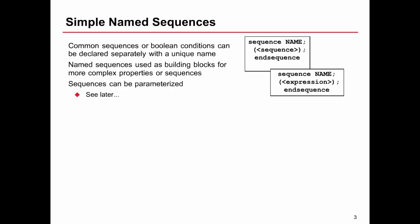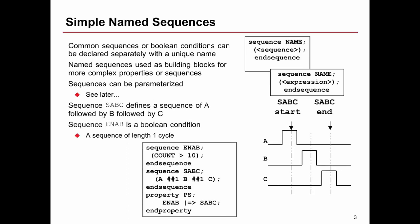Once we define a sequence it would be helpful if we could give that a name so we could reuse it in many different contexts at a later time. We can use these named sequences as building blocks for more complex sequences and properties. Sequences can also be parameterized, so for example if we describe a sequence that describes a burst, we don't need to write a separate sequence for a burst of length 4, 8, and 16. We can write one sequence and pass a parameter for how many beats are in that burst.